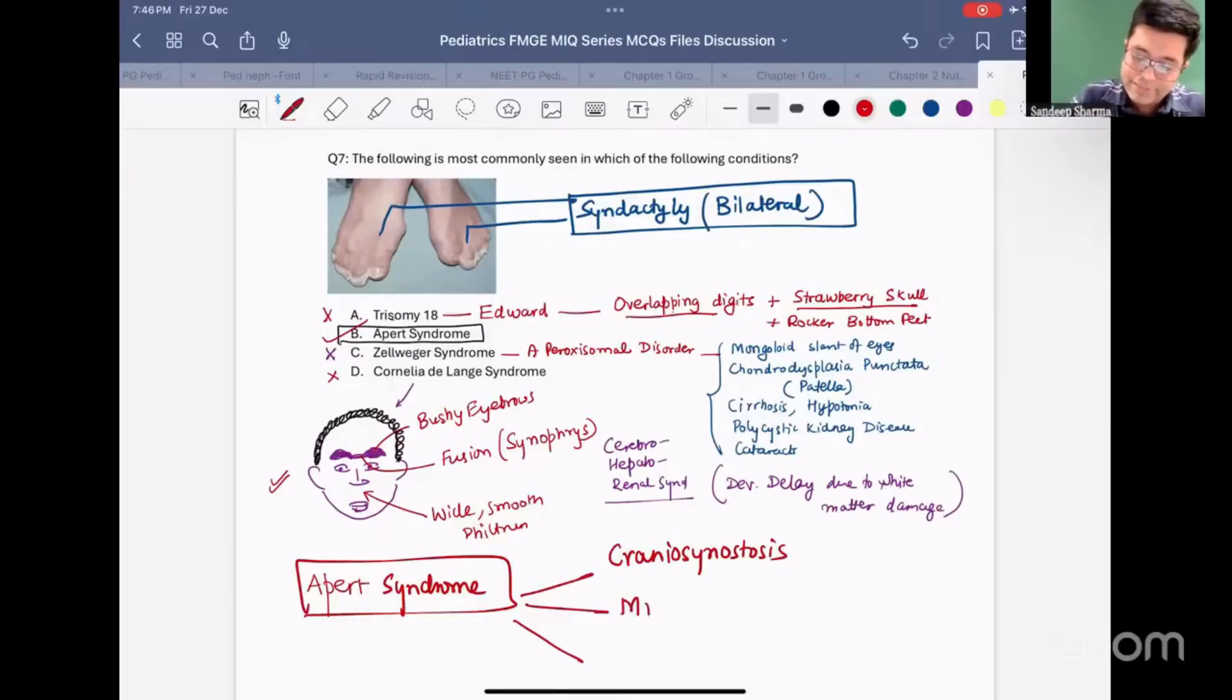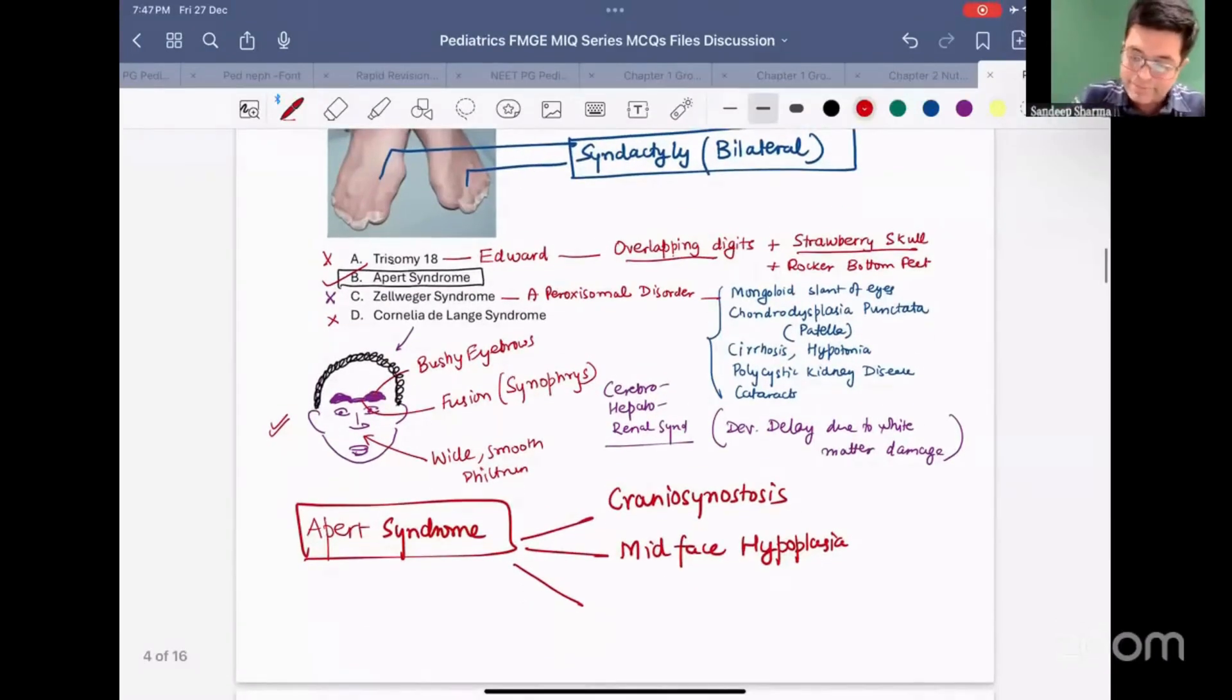Second thing, Apert syndrome is having mid-face hypoplasia. Middle part of the face is hypoplastic and it is gone inside. It appears concave if you see laterally. And thirdly, they will be having bilateral syndactyly, also called as mitten hands. This is Apert syndrome.